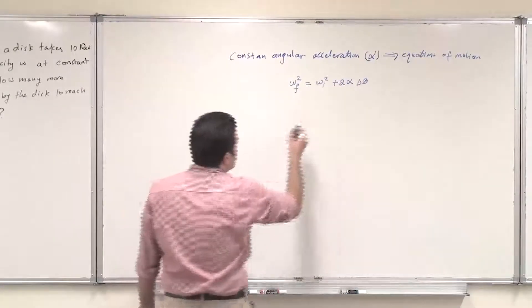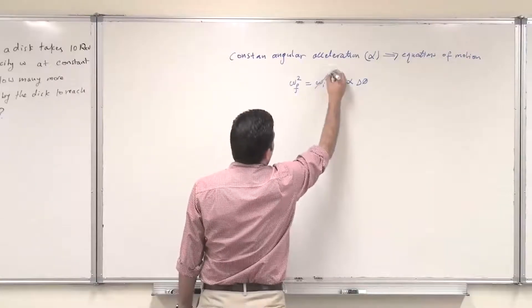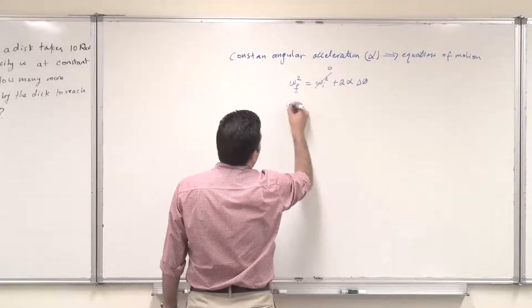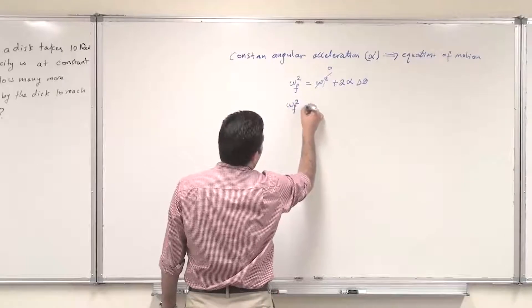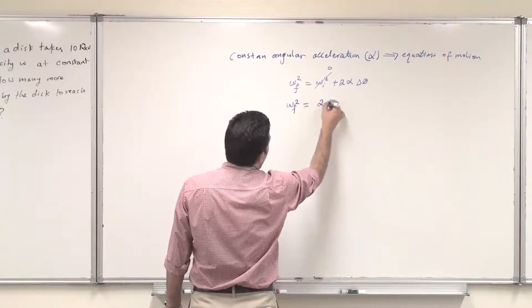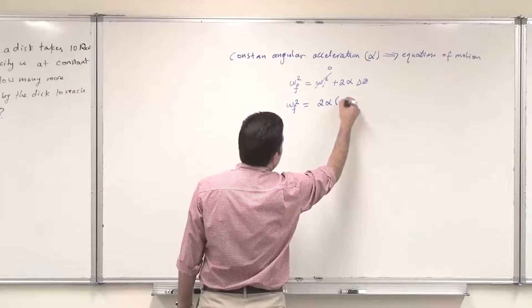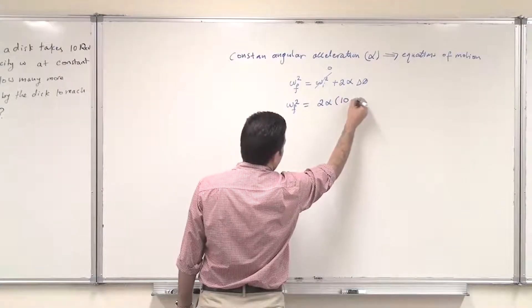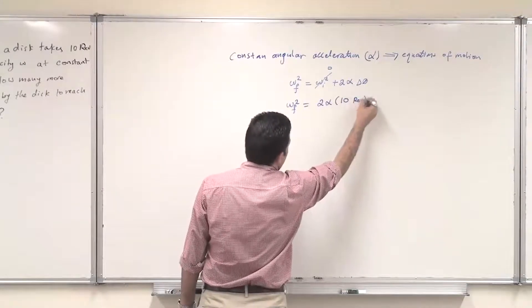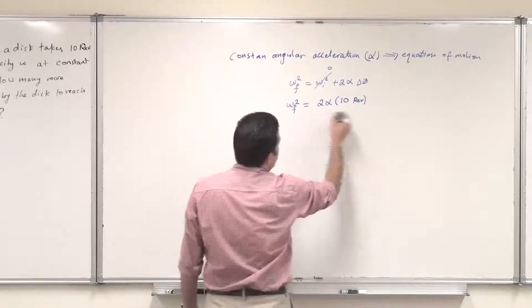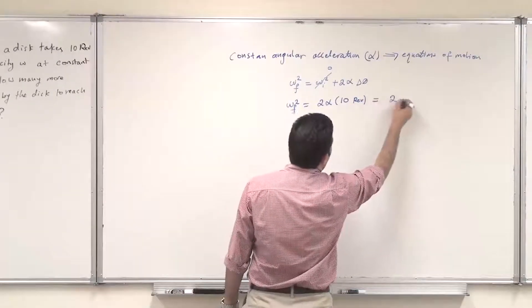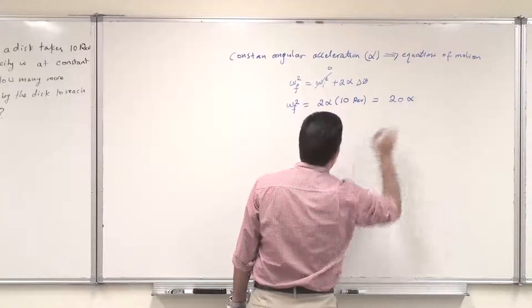Since we are starting from rest, this term will be zero. So omega final squared will be 2 alpha. The number of revolutions for the first case is 10 revolutions, so omega final squared will be 20 alpha in terms of revolutions.